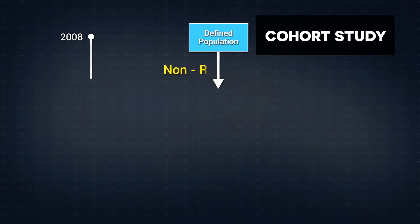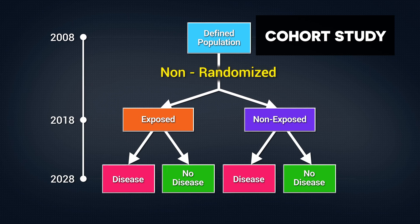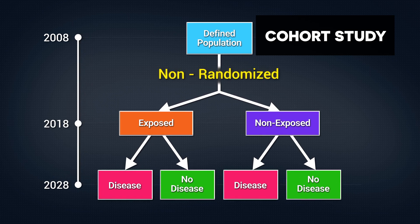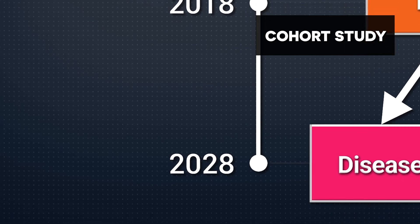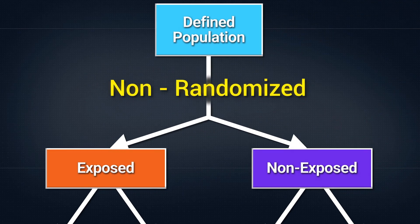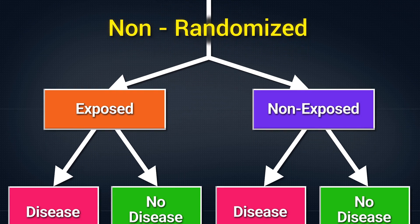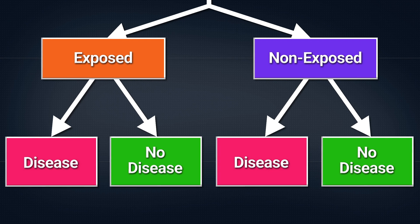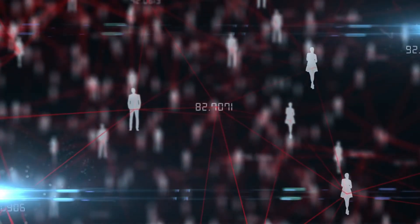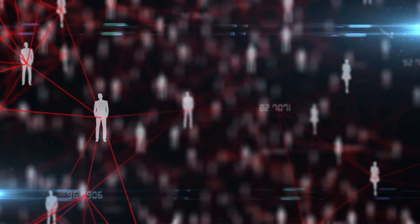In a cohort study, a group of exposed or unexposed individuals — both without disease — are identified and then followed over time. Exposures in those who newly develop the disease are compared with exposures in those who remain healthy. Researchers can examine relationships between multiple exposures, such as diet and physical activity, and multiple newly occurring diseases, such as Alzheimer's disease and diabetes. Examples of cohort studies include the Nurses' Health Study and the Framingham Cohort Study. The importance of a cohort study is that you follow individuals over time to see whether they acquire the disease.